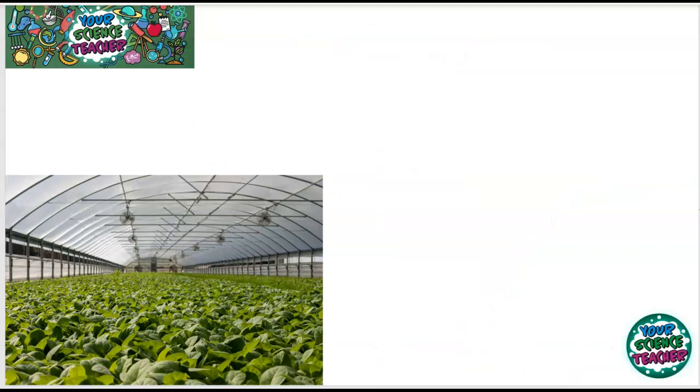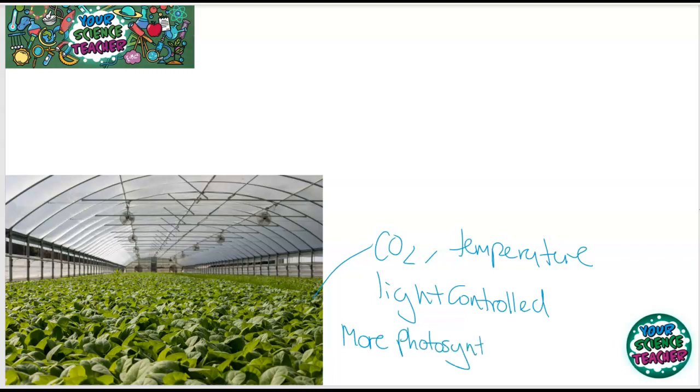If you're commercially growing plants or vegetables in a greenhouse, it's important that you do know about the limiting factors so that you can maximize the amount of revenue you can make from your plants. And greenhouses do this by controlling the amount of carbon dioxide, the temperature, and light inside of a greenhouse. And the reason why they do all this is because the more photosynthesis that occurs equals the quicker it grows, and also the bigger it grows as well.